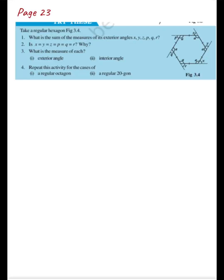Good evening. Let's discuss Try This page 23. Take a regular hexagon — a regular hexagon means all sides are equal and all angles are equal. Hexagon means six sides. Now, what is the sum of measures of its exterior angles x, y, z, p, q, r? Here you can see some exterior angles x, y, z, p, q, r.